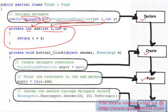The second thing is we create the delegate — we create a reference to the delegate. For 'pointToAddFunction' we have created a reference called myptr. The third step: we point this reference to the method add — myptr is going to point to this.add. Finally, we invoke the delegate by using the invoke function. myptr.invoke — I am passing two numbers to it and showing the output. So: declare the delegate using the delegate keyword, create the reference, point it to the method, and finally invoke the function.